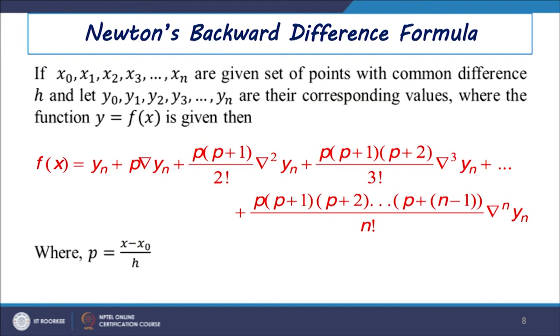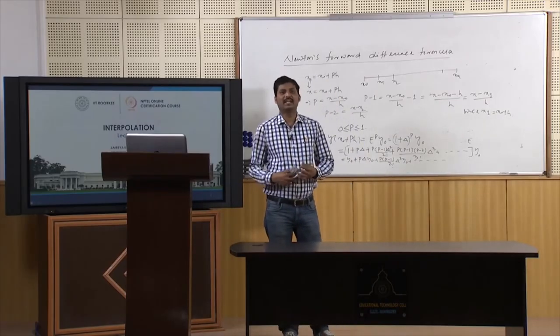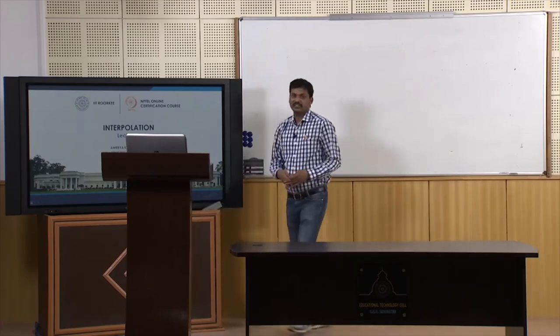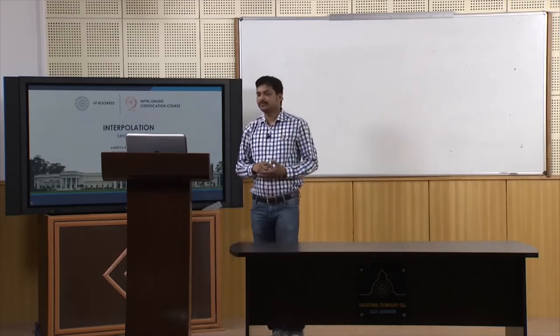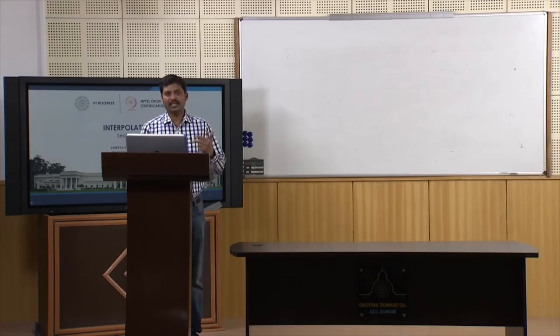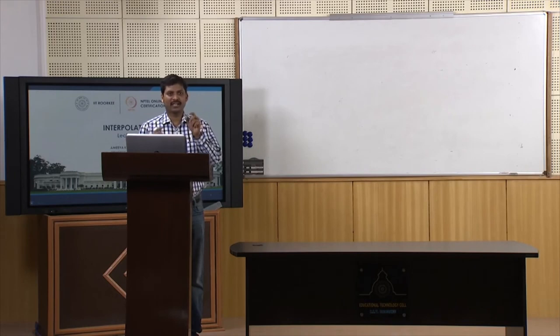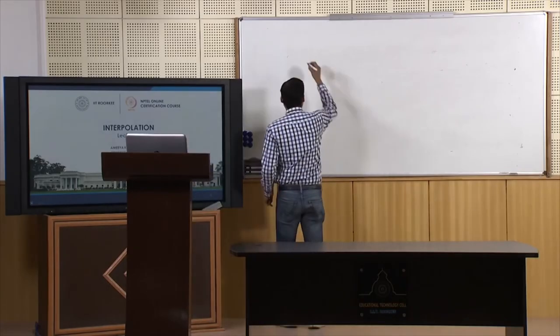Next we discuss Newton's backward difference formula. In this formula we use tabular values at the end of the table only. If the set of tabular points is x0, x1, x2 up to xn with corresponding values y0, y1, y2 up to yn, and each point is equispaced so that x1−x0 = h and x2−x1 = h, then we write Newton's backward difference formula.